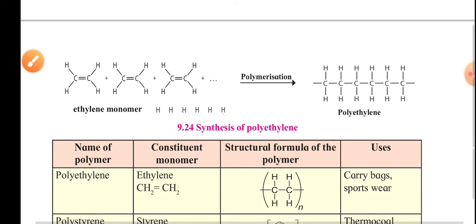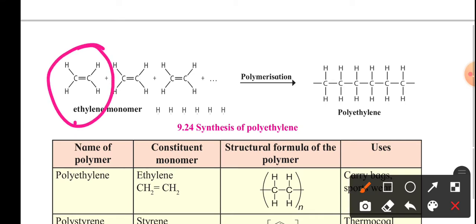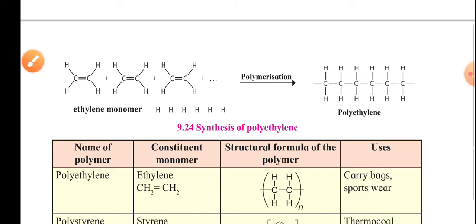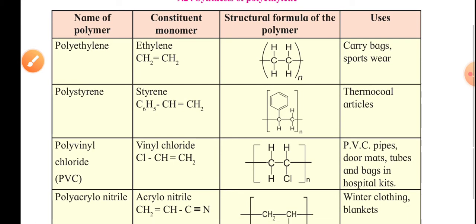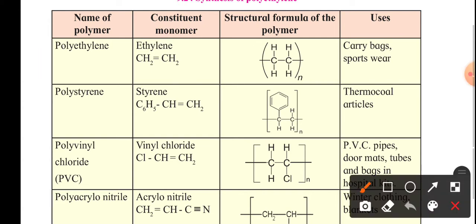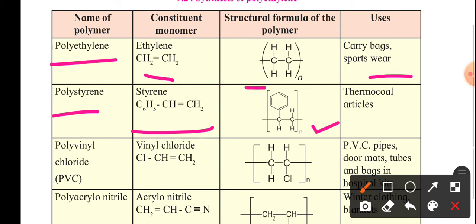You can see over here the ethylene monomer. These all connect together forming polyethylene. Another example given is the polymer name, corresponding monomer, structural formula, and uses. Polyethylene is one example. Polystyrene, used for thermocol, has the monomer C6H5CH=CH2. The structural formula is shown, and the 'n' in the formula indicates the polymeric nature of the component monomers.